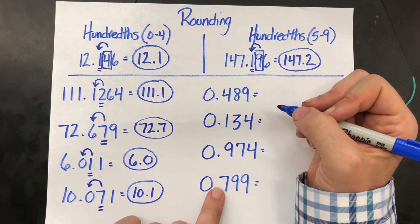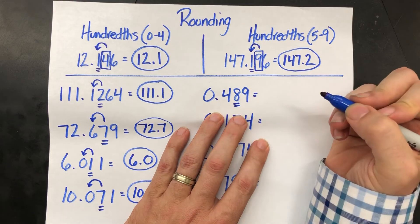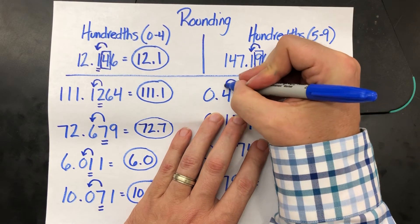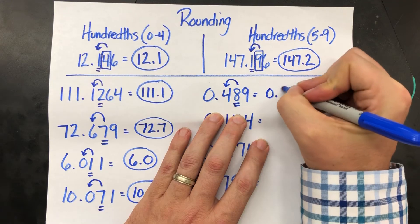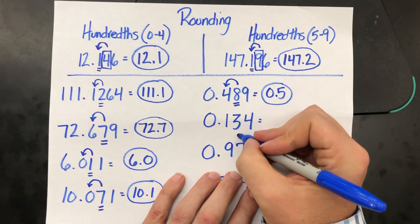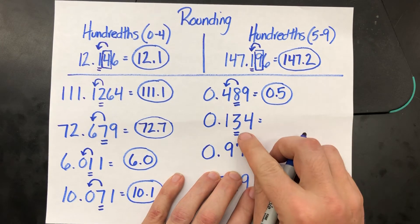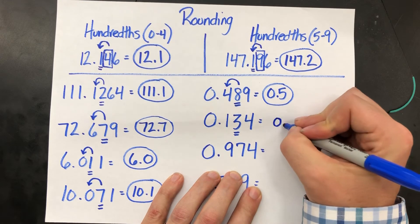Even numbers less than one. Zero point four eight nine. Eight in the hundredths is going to make that four jump up to a five. Zero point one three four. That three in the hundredths will not do anything to the one in the tenths. Zero point one.